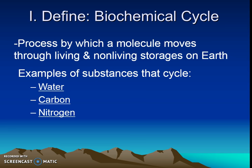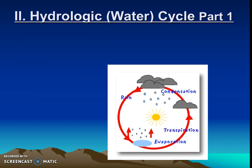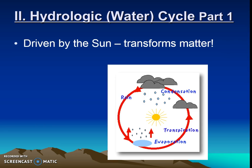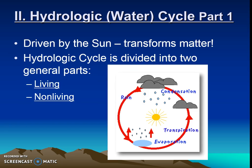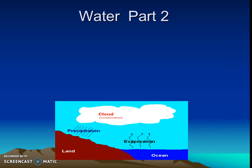There are a couple of major cycles we're going to learn about: the water cycle, the carbon cycle, and the nitrogen cycle. Let's start with the water cycle, sometimes called the hydraulic cycle. The water cycle is driven by the sun — it transforms or changes the state of matter, so water will go from liquid to gas or gas to liquid as it moves through the cycle.